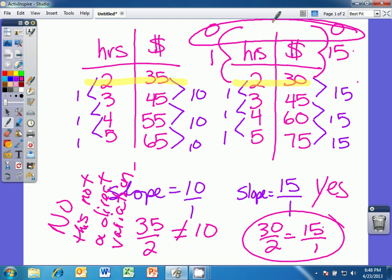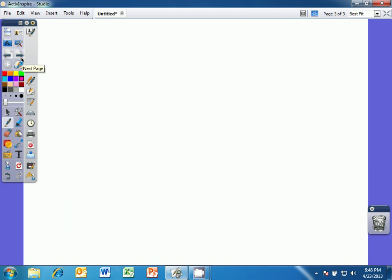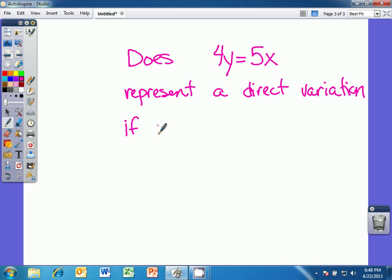If we're not supplied with a table, but simply given an equation and asked if it's a direct variation function, we need to manipulate the given equation and try to fit it into the form y equals kx. So for example, does 4y equal 5x represent a direct variation function? And if it does, what is k? Or in other words, what's the direct variation constant?